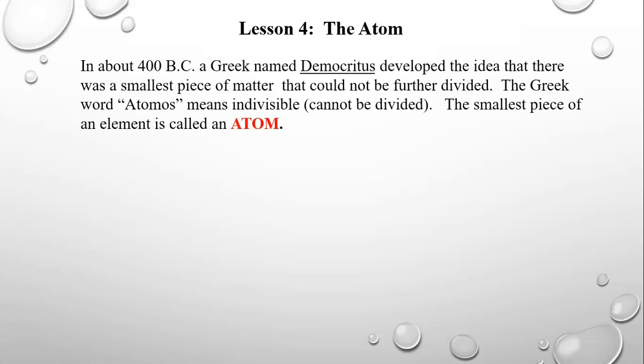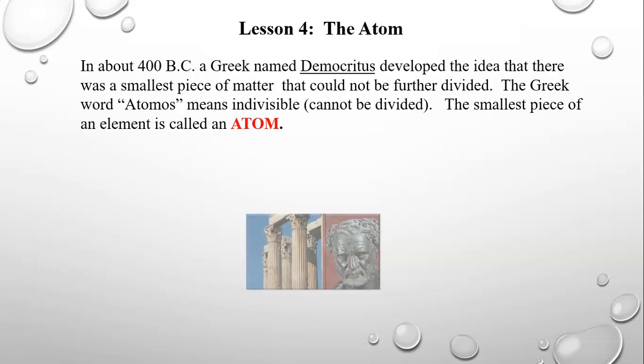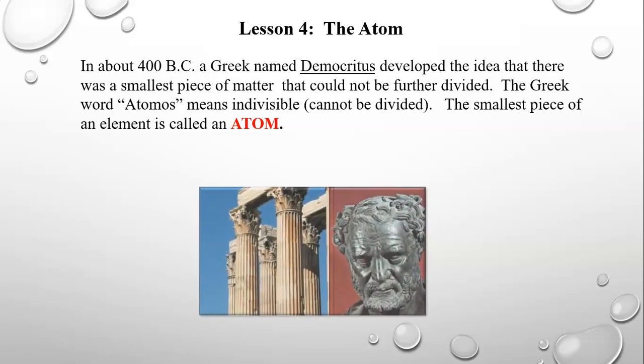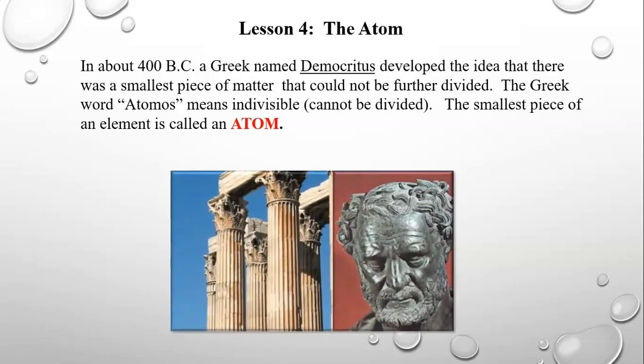In about 400 BC, a Greek named Democritus developed the idea that there was a smallest piece of matter that could not be further divided. The Greek word atomos means indivisible, and the smallest piece of an element is called an atom.